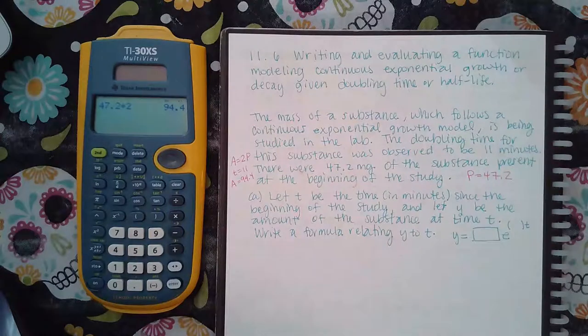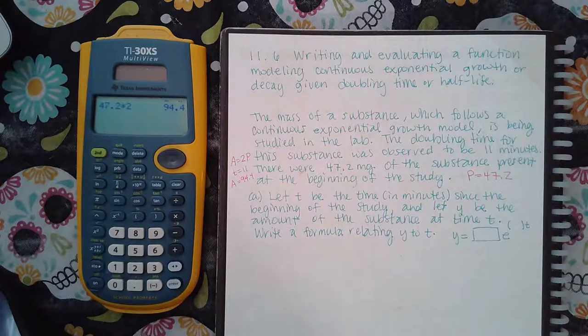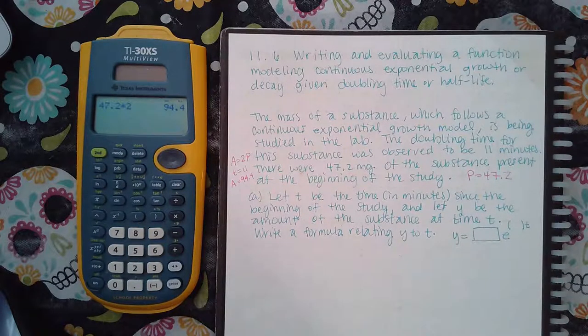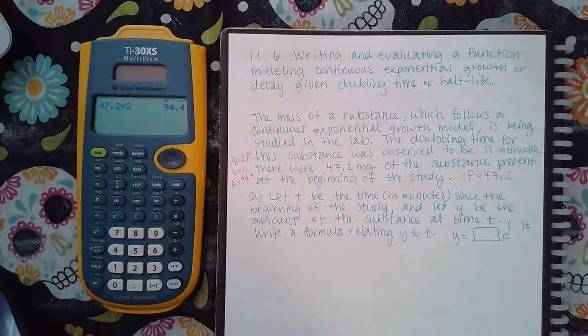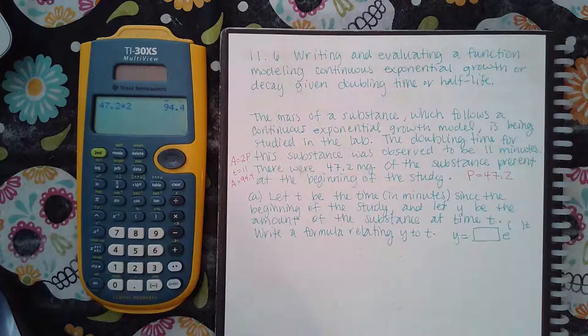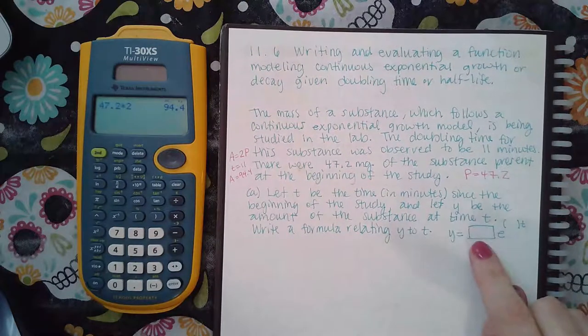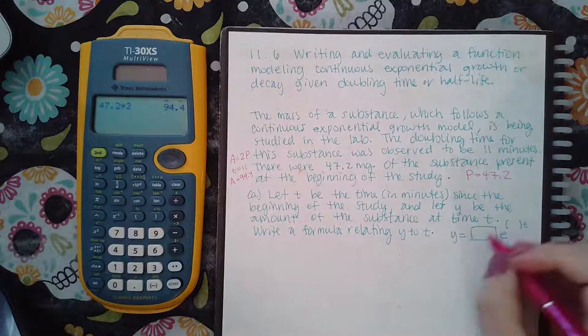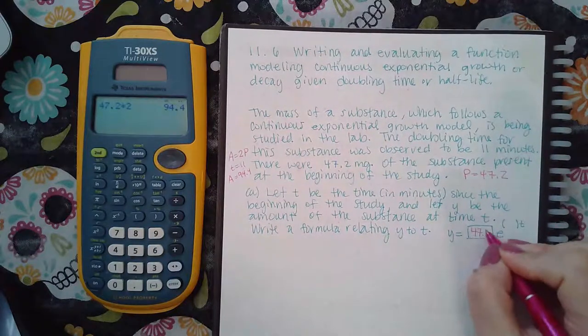Let T be the time in minutes since the beginning of the study, and let Y be the amount of the substance at time T. Write a formula relating Y to T. So they want to know the rate and the initial amount. We already know the initial amount, that's 47.2.